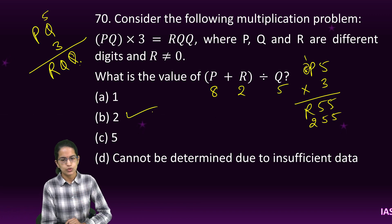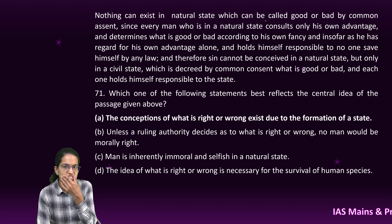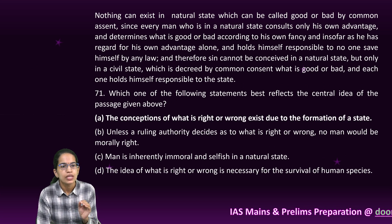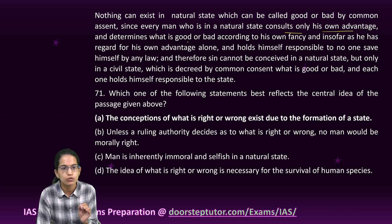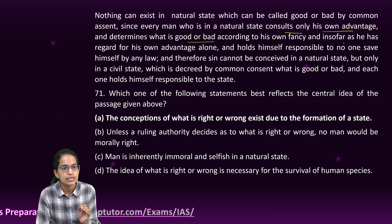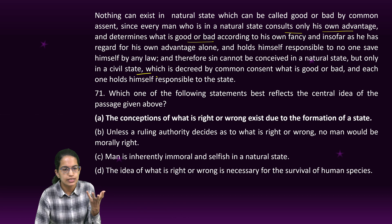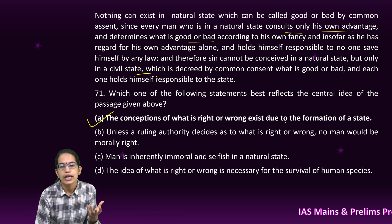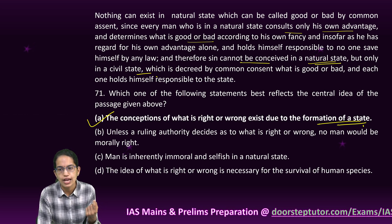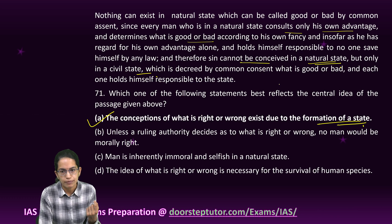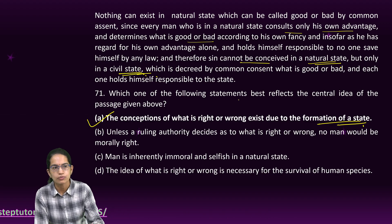The next question is a passage: nothing can exist in a natural state that is good or bad by common assent. Even a man in the natural state consults only his own advantage and determines good and bad according to his own fancy. The conception of right and wrong exists only due to the formation of the state and cannot be conceived in a natural state — only in the civil state. So one is the right option as the central idea of the passage.